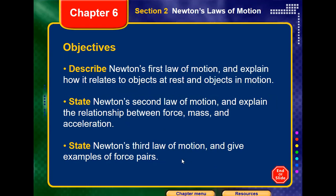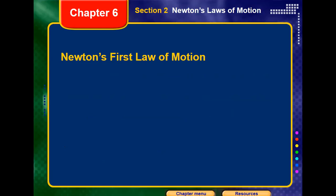We also need to state Newton's third law of motion and give examples of force pairs. So from these objectives we can figure out that we have three different laws of motion stated by Newton. Newton is one of the most famous scientists who talked about forces, including the gravitational force and the law of gravity. One of the most important parts of Newton's work is that he started to describe how force could affect the motion of an object, and he put some laws to describe this effect.